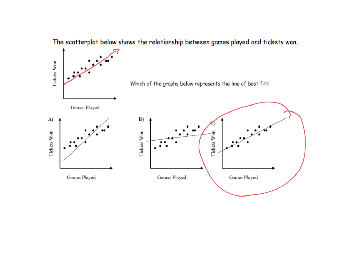This question shows a positive correlation. As the number of games played increases, the value of tickets won is also increasing — going up. So as X increases, Y is increasing.